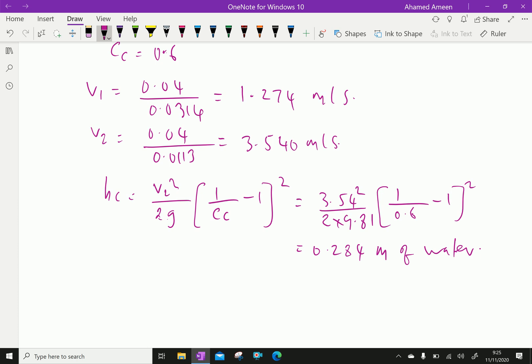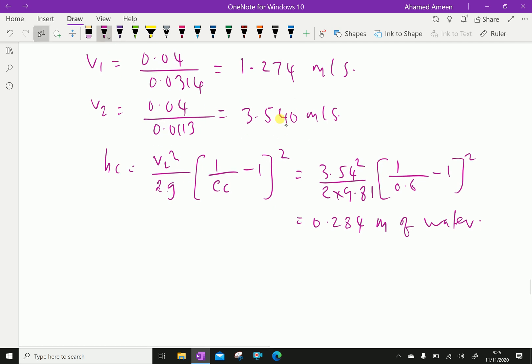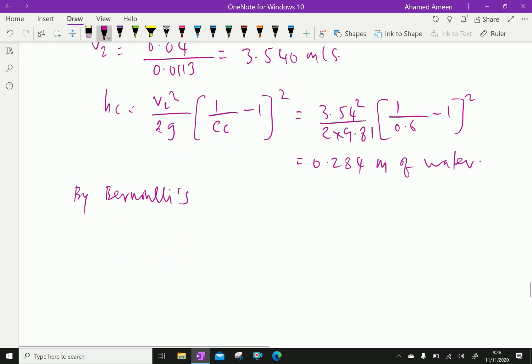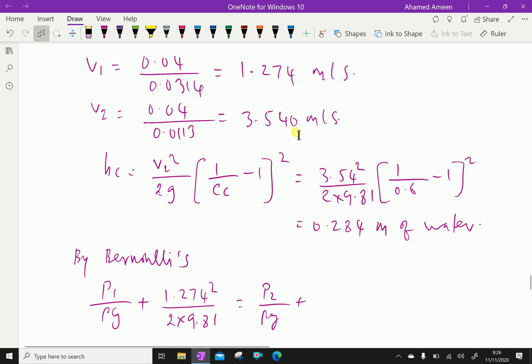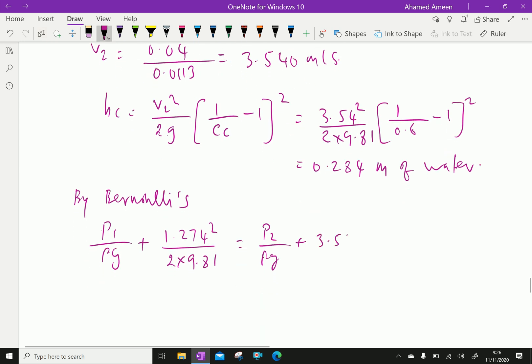Applying Bernoulli's equation, P1 by rho G for section 1 and 2, that is V1 square 1.274 square over 2g, 2 into 9.81 equals P2 by rho G plus V2. V2 equals 3.540, 3.54 square over 2 into 9.81 plus losses.